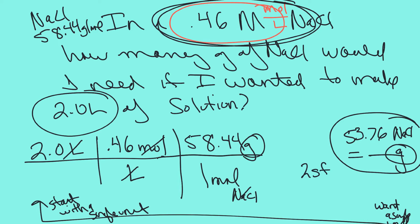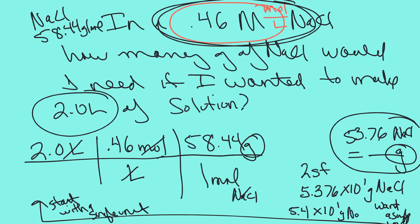With two sig figs, that's 5.376 × 10¹ grams of sodium chloride, rounded to 5.4 × 10¹ grams of sodium chloride.